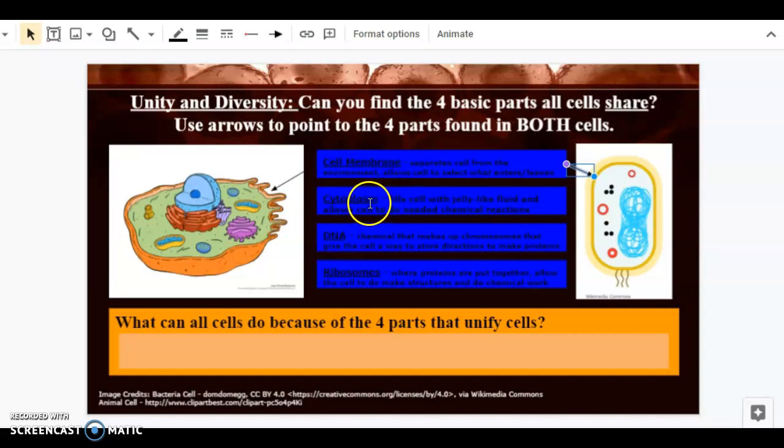Next we have the cytoplasm, which fills the cell with a jelly-like fluid and allows the cell to do chemical reactions. Both of these cells have filling. Over here it's a dark green, and over here it's a much lighter whitish color. Let's grab an arrow, and we're going to point to this green space. That is the cytoplasm.